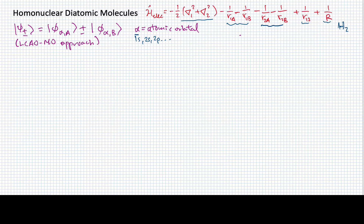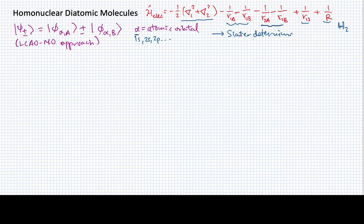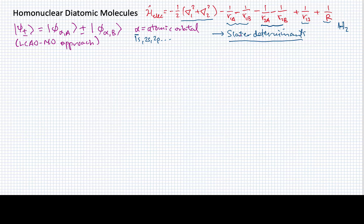We also have to pay attention to the fact that all these electrons have intrinsic angular momentum — they have spin. So when we construct these wave functions, we're going to have to construct them as Slater determinants. I hope you'll recall what that is from our multi-electron atoms.